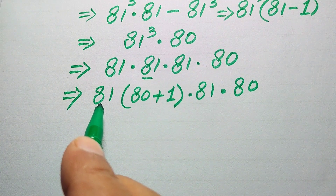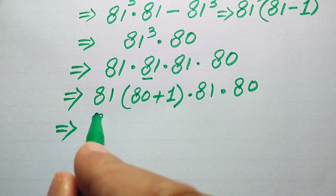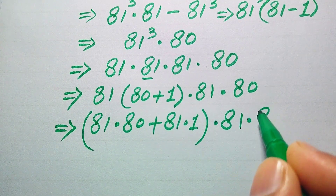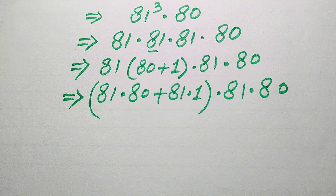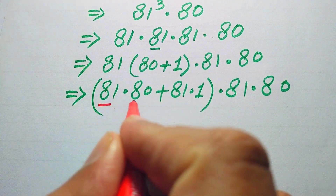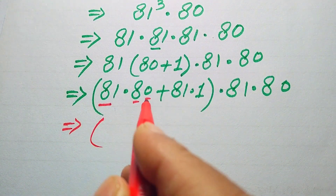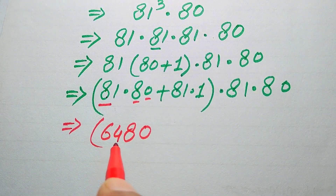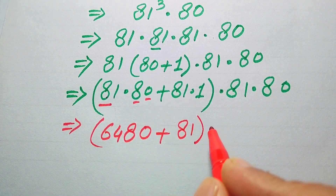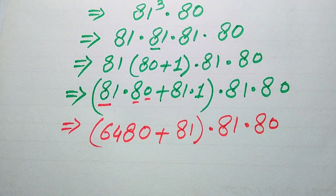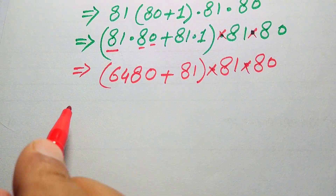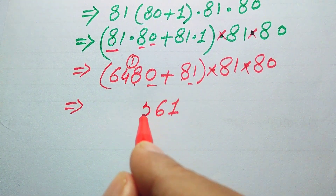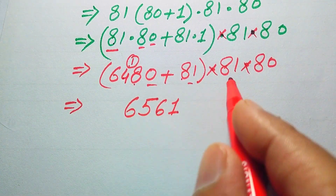We multiply 81 across both values: 81 × 80 plus 81 × 1. For 81 × 80, treating 80 as a one-digit multiplier with a zero appended: 8 × 81 gives 648, so 81 × 80 = 6480. Adding 81 × 1 = 81, we sum: 6480 + 81 = 6561. So 81 × 81 = 6561.